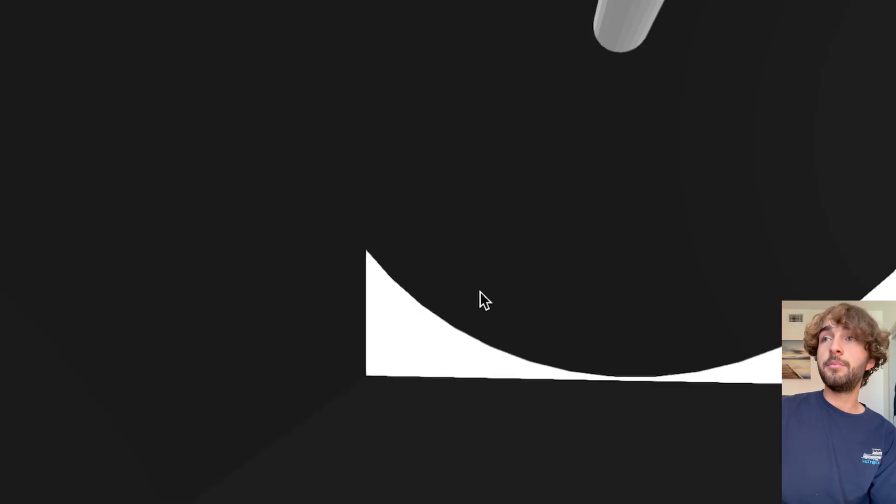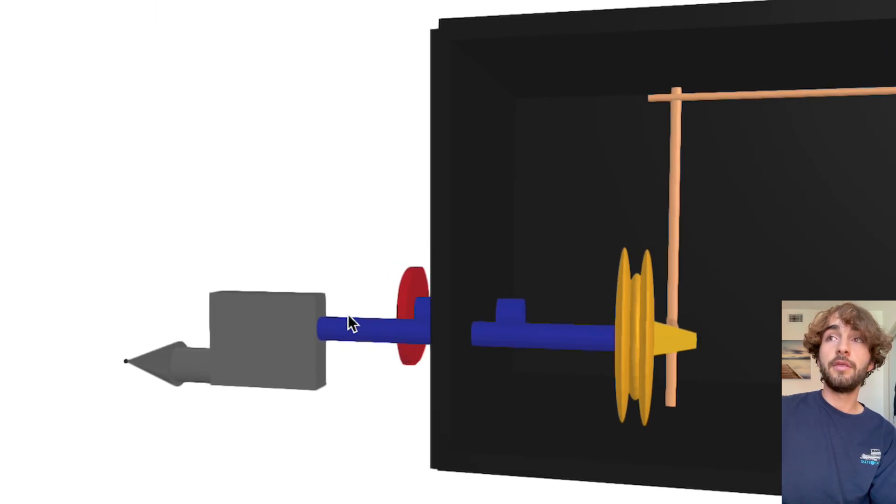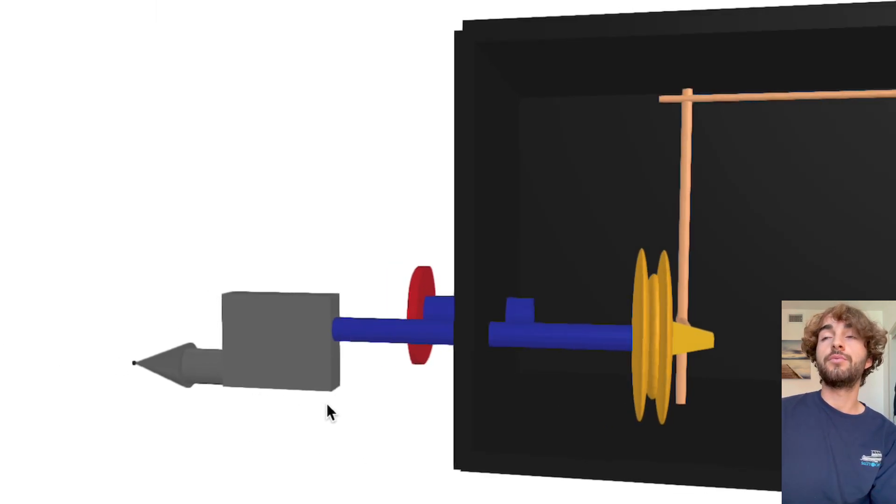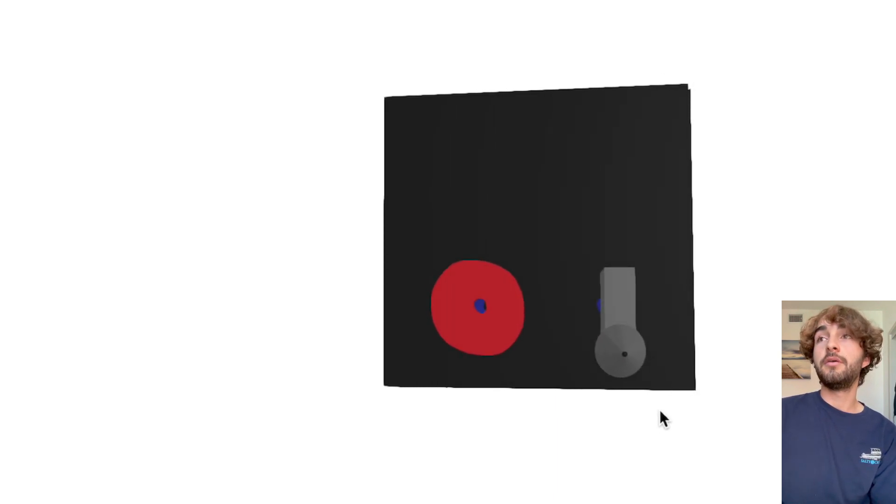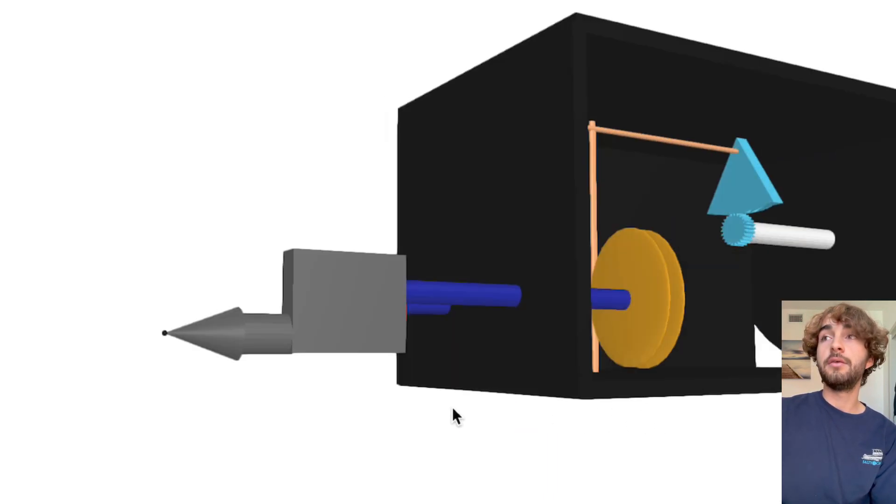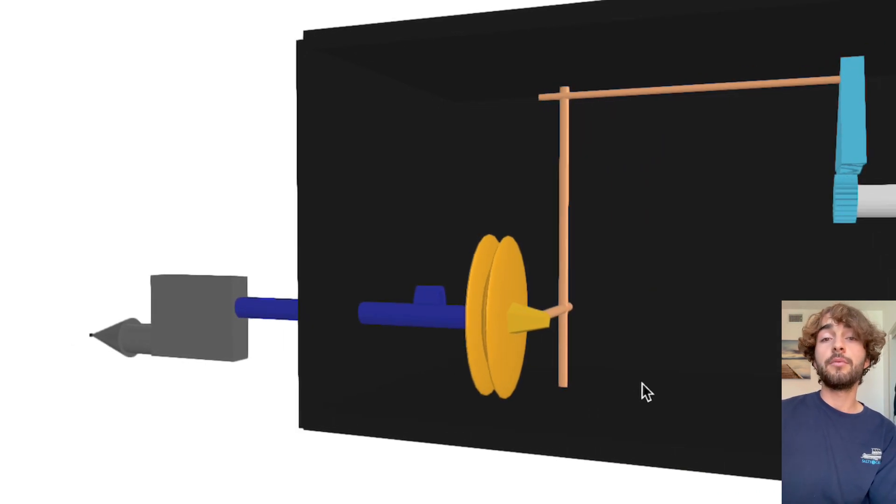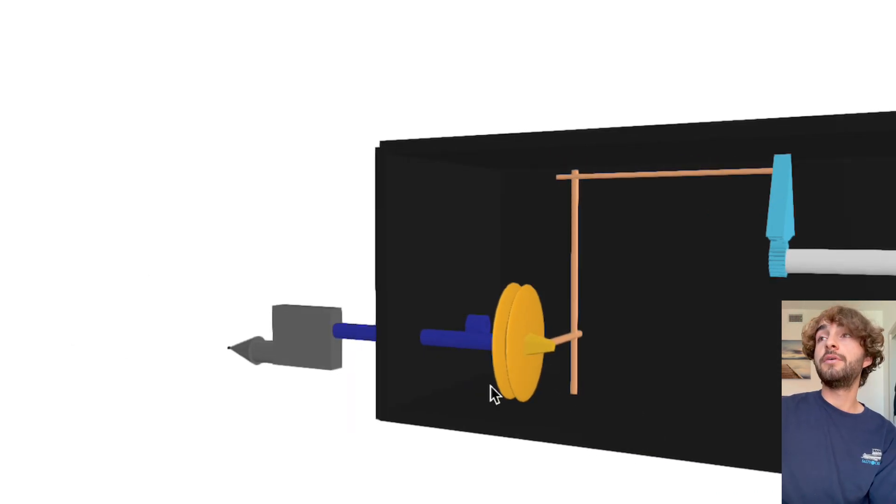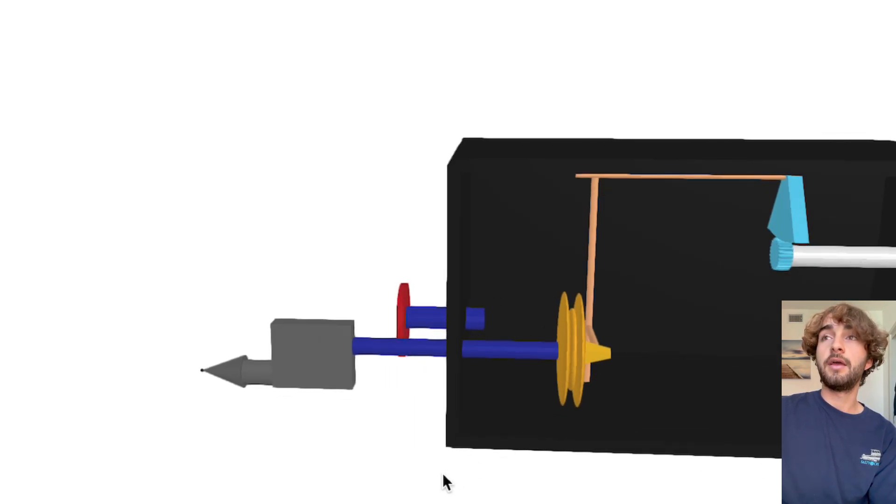Now, the reason that we need the pitot tube for this instrument, compared to the VSI and the altimeter, they don't need it at all, is because we need to be able to read the actual ram air or the impact air that's going to be flowing through and then hitting the diaphragm because that's what's going to actually make it expand and then give us an accurate reading on the needle. But we also need to be able to read the different pressure of air outside. So they work hand in hand, the pitot tube and the static port because it works kind of just like the altimeter.